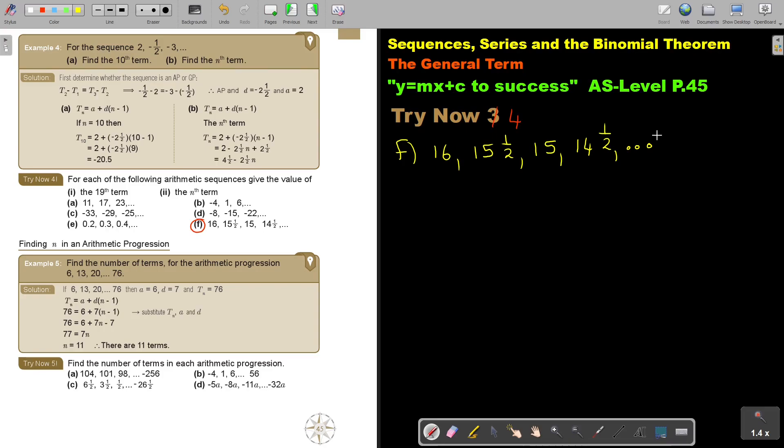I'm first going to find, is it an AP? Now, the best way is to find, is to say 15½ minus 16, and that is going to be negative ½. And then 15 minus, and it's negative ½. So, it's definitely an AP. So, it's an AP. And I can maybe just write this in.